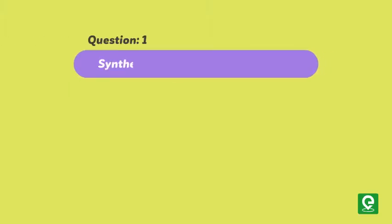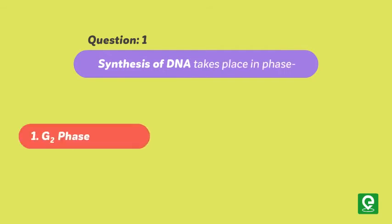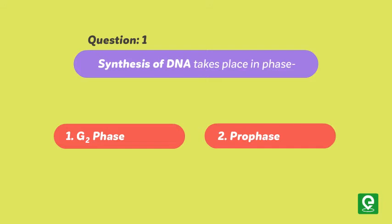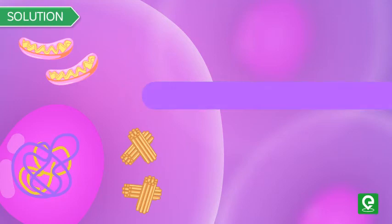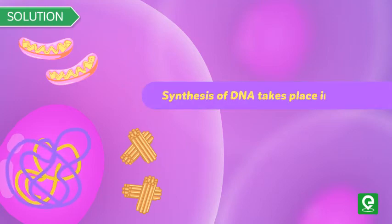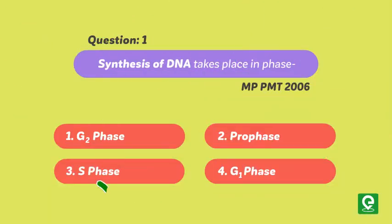Question 1: Synthesis of DNA takes place in phase: 1. G2 phase, 2. Prophase, 3. S phase, or 4. G1 phase. This question was asked in MP PMT 2006. Solution: Synthesis of DNA takes place in S phase. Hence option 3 is correct.